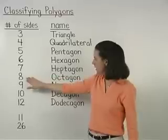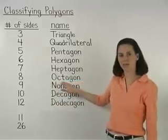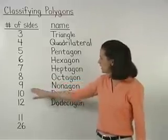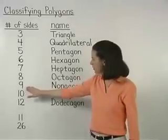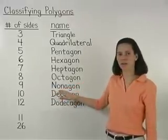If it has eight sides, it's called an octagon. If it has nine sides, it's called a nonagon.